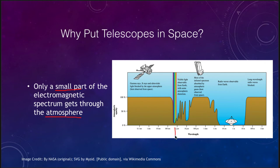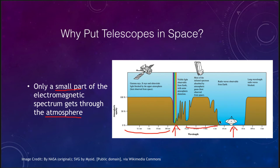Visible light makes it through, and lots of radio waves make it through. But if we want to look at things like gamma rays, x-rays, and ultraviolet — the short wavelength portion — very little of that gets through the atmosphere. A lot of infrared and even shorter wavelength radio are blocked out as well. So if we want to observe these, we have to get up high above the atmosphere in order to be able to see them.